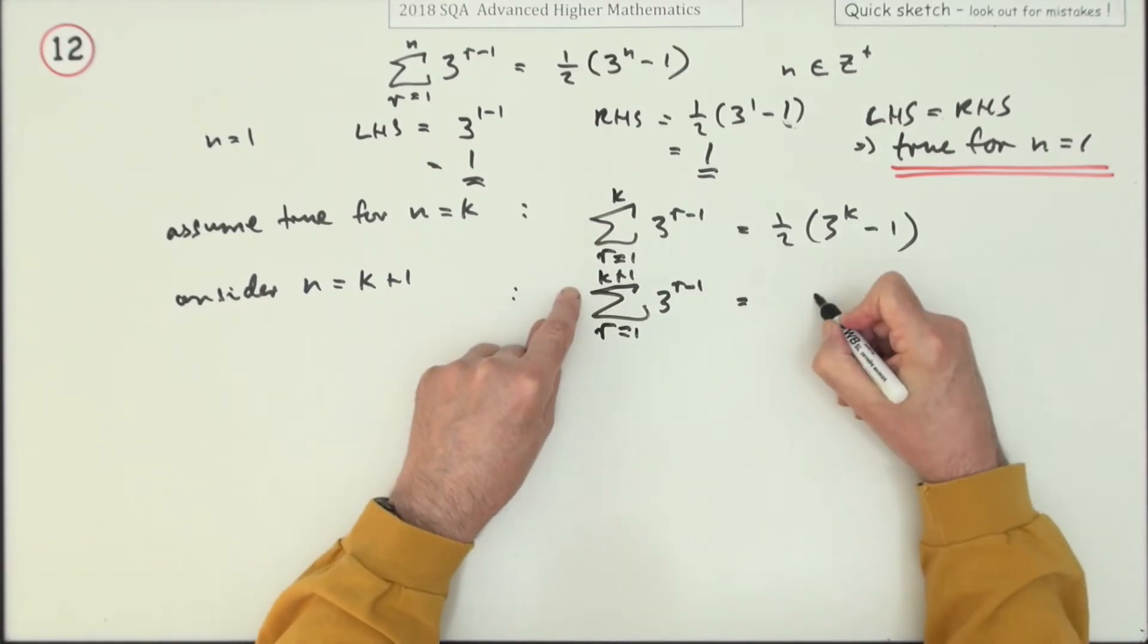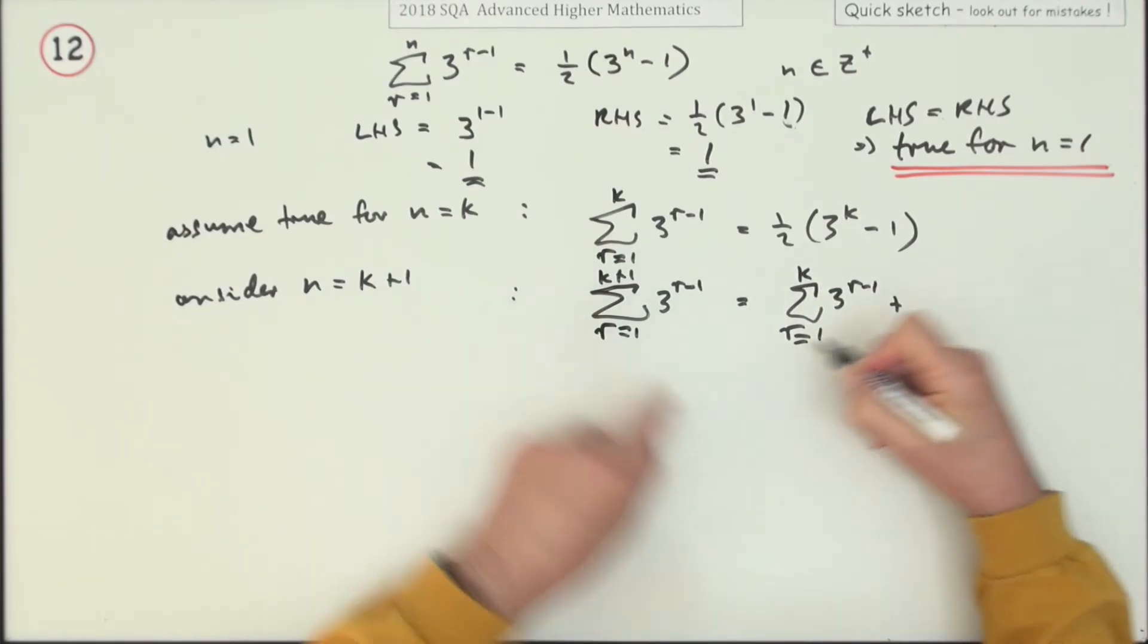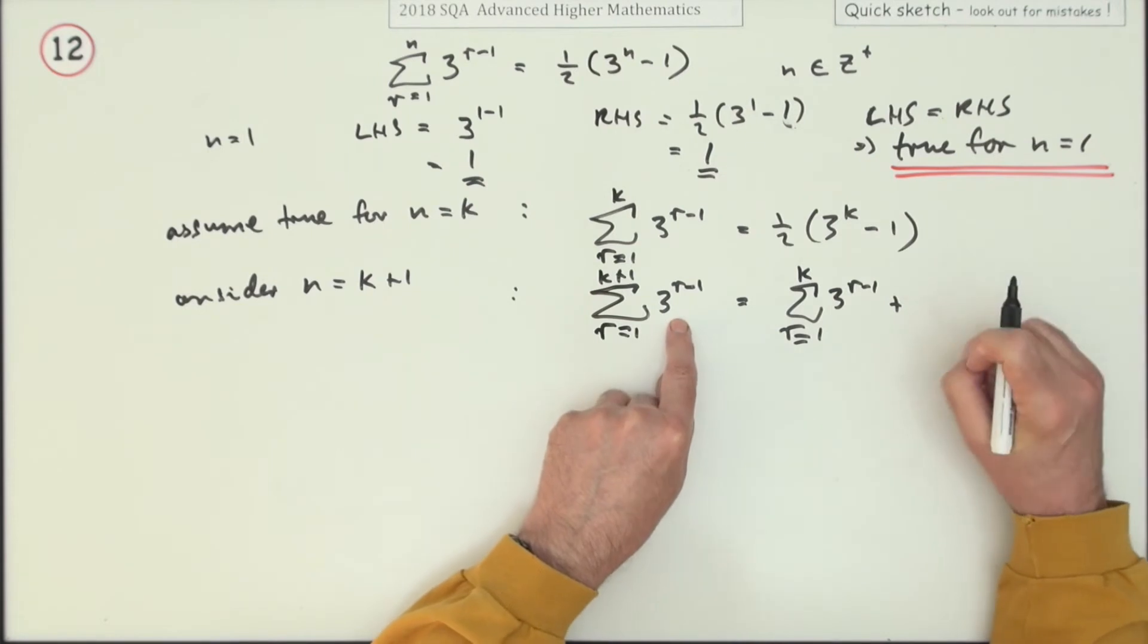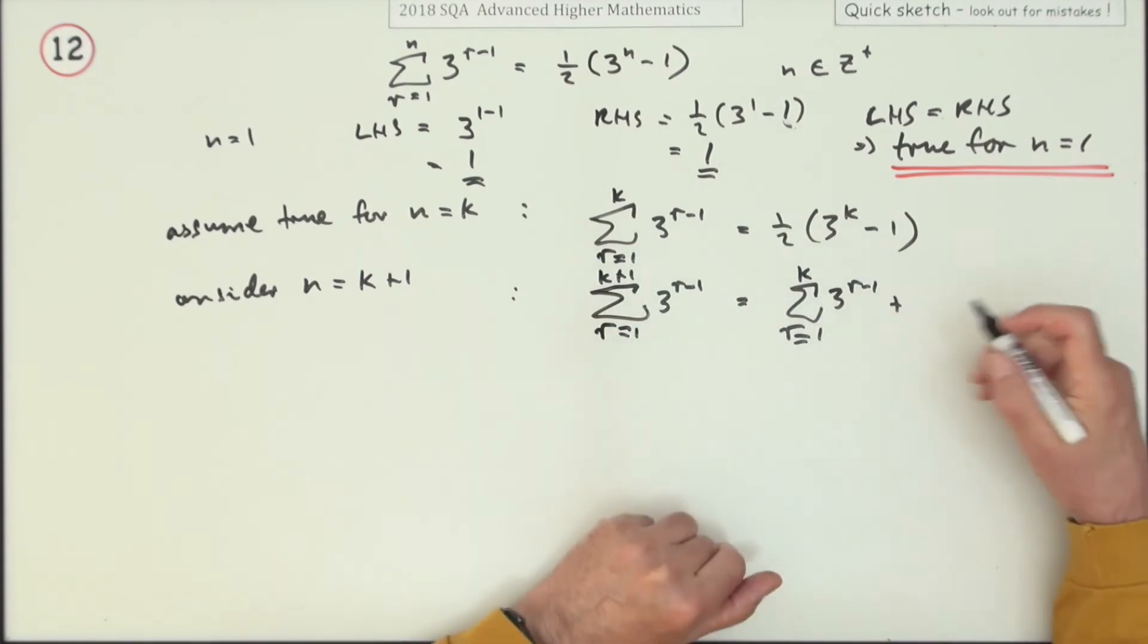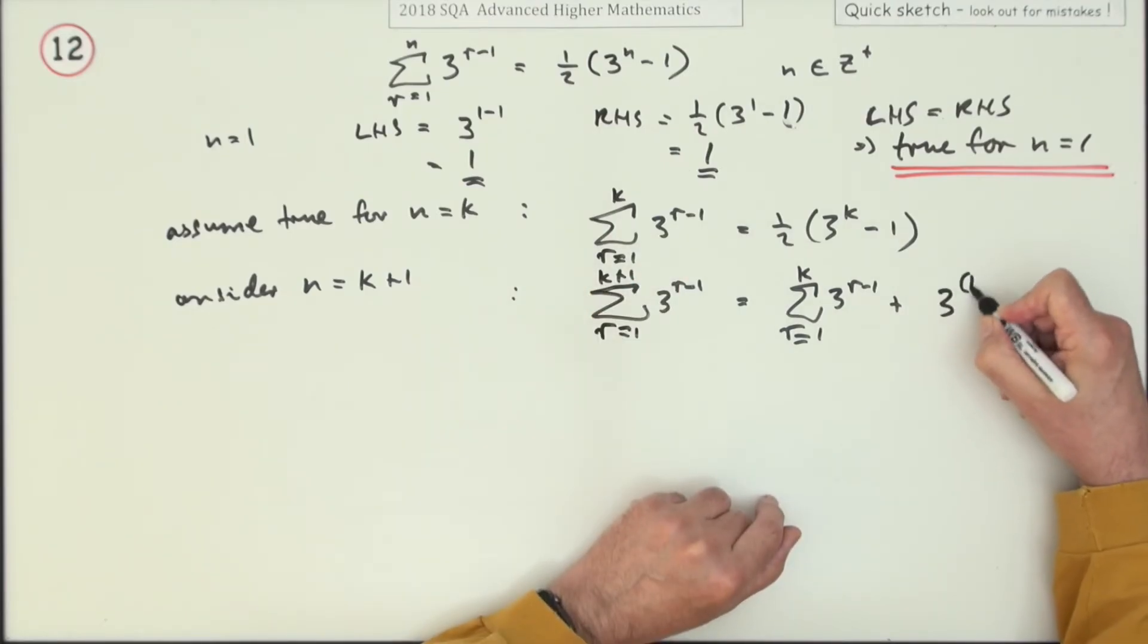Well that can be split into the sum from r equals 1 to k plus the very next term, the last term, the term when r is equal to k plus 1. So that would just be plus when r is k plus 1, it'll be 3^(k+1-1).